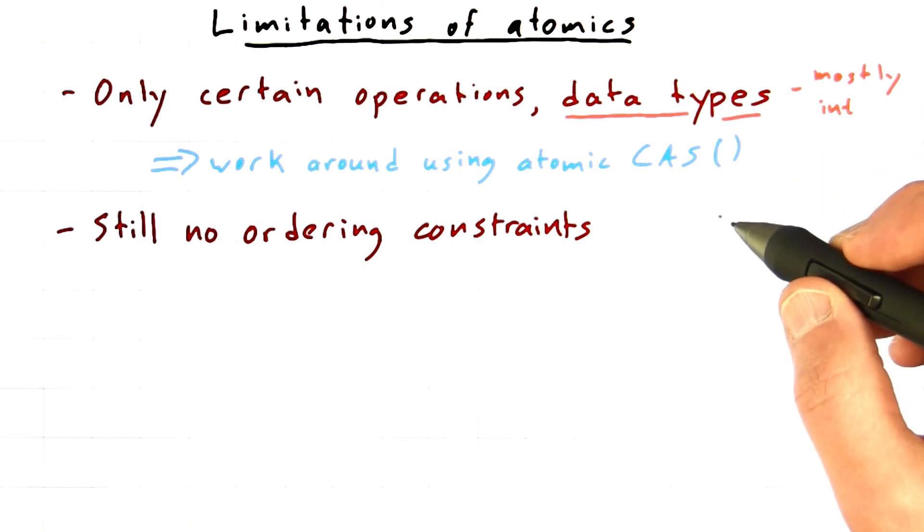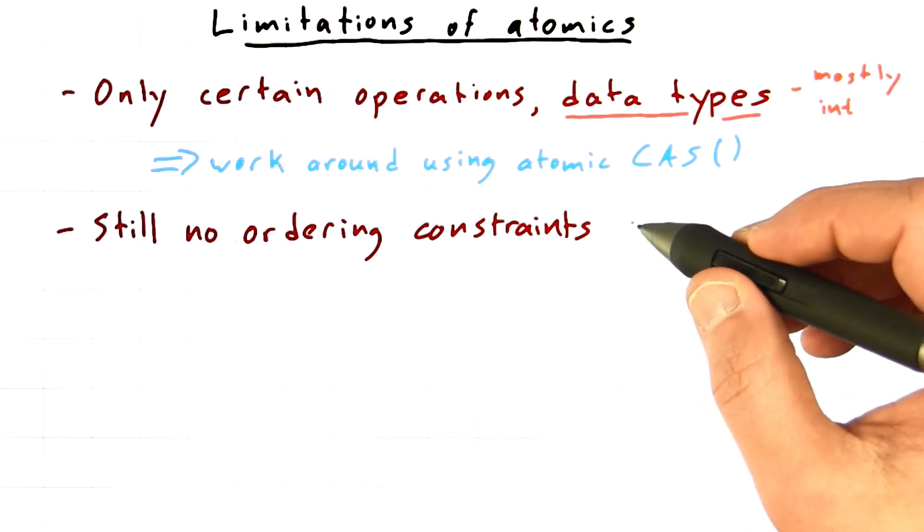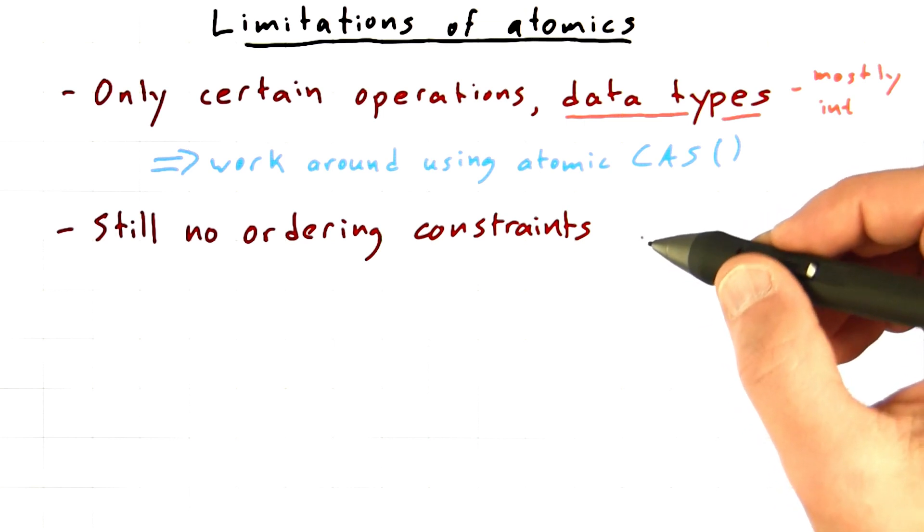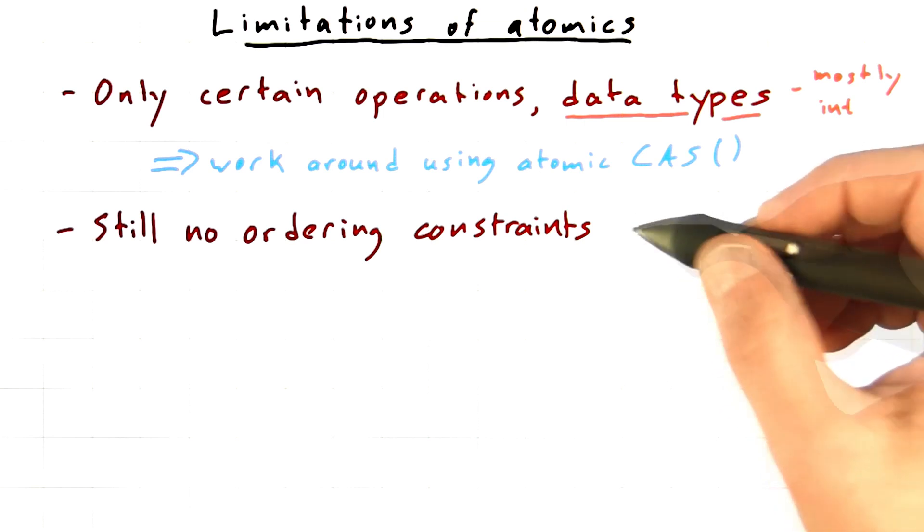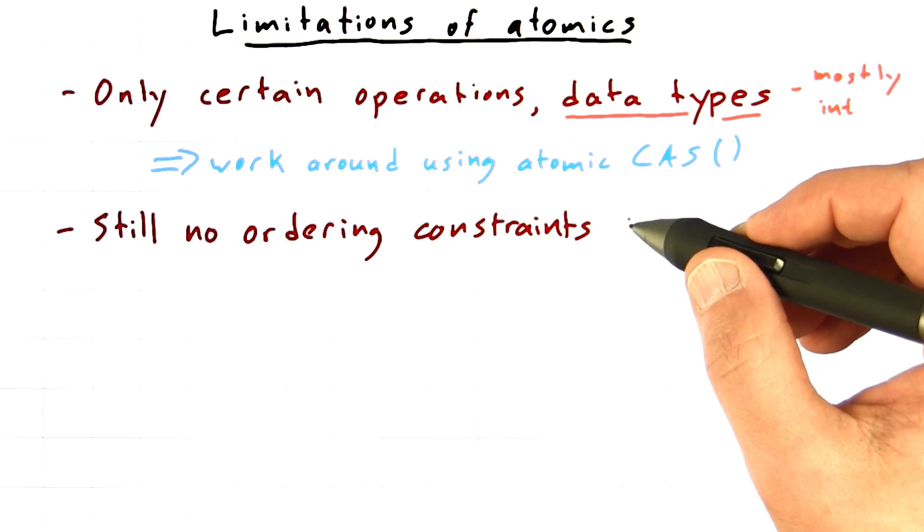You need to be aware that there's still no ordering constraints. The different threads in a thread block and the different thread blocks themselves will be running in some unspecified order. It'll be different every time. And so the operations that you're performing on memory using atomics are still going to happen in an unspecified order.